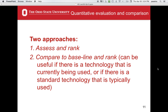We're going to look at two methods. The first is the assess and rank method. The second is compare to baseline and rank. The second method is often preferred when there's an existing technology being used by a community or NGO — that becomes the baseline and all evaluations are made relative to it. We'll talk about each method and the relationships between them.